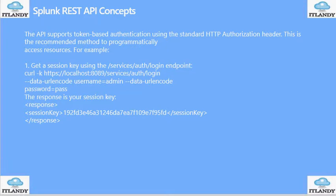The first example is getting a session key using the services authentication endpoint. You can use a cURL command: HTTPS localhost 8089 services authentication logon, then supply the username and password. The response will be the session key — I will highlight it here — this is the key associated with my session.